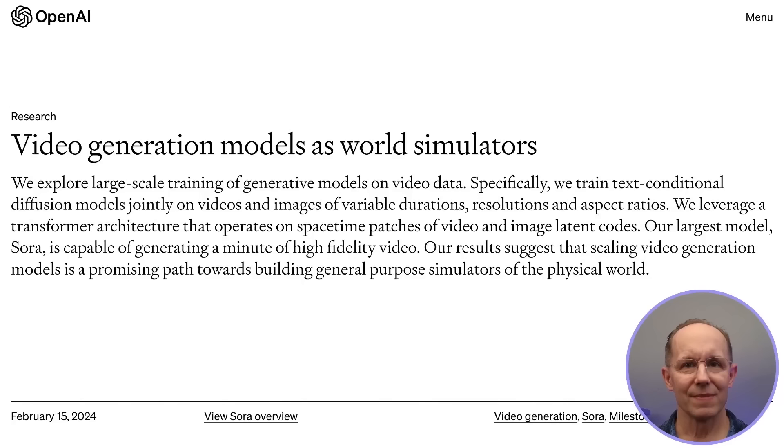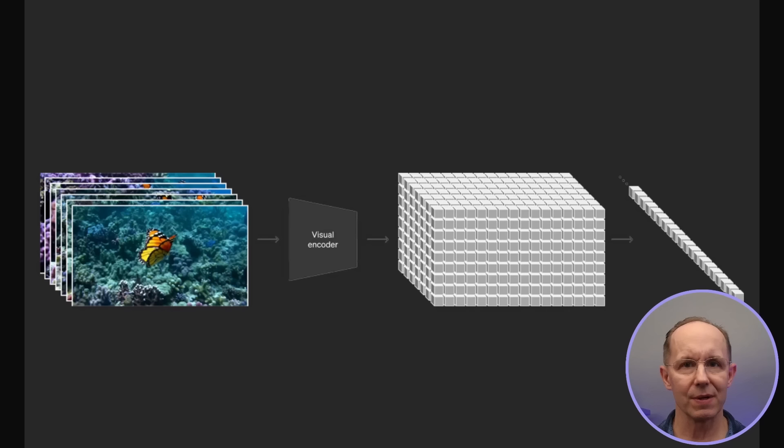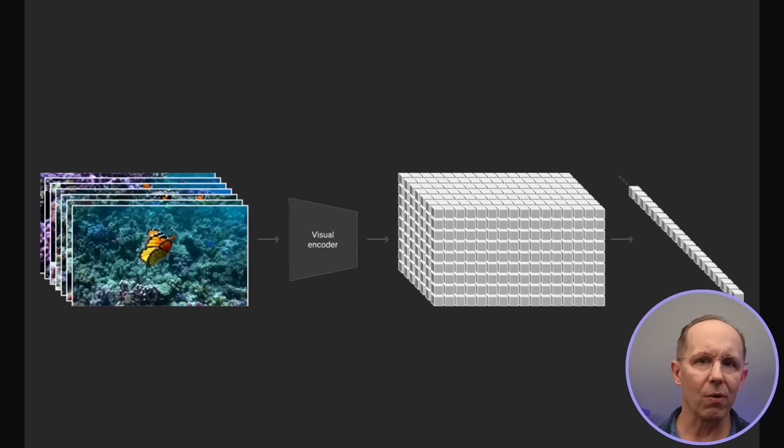Let's break that down. Take a look at this graphic from OpenAI's paper on video generation models as world simulators. Space-time patches are small sub-regions or segments of a video that span both space and time, and they're used as input to the model. Image latent codes are compressed hidden representations of data that capture the essential features from frames of a video in a lower dimensional space. Sora's transformer architecture allows it to capture dependencies and relationships between these different space-time patches, extracting and learning meaningful patterns from the video and image data.